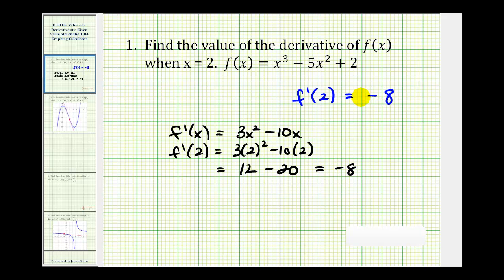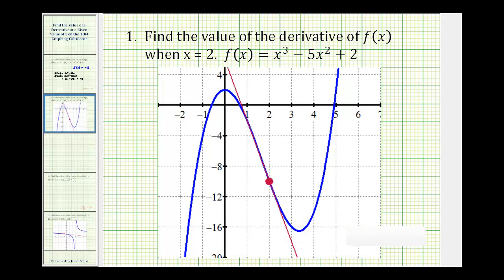And again, what this value tells us is, going back to the graph of our function, at x equals positive 2, the slope of the tangent line would be negative 8.